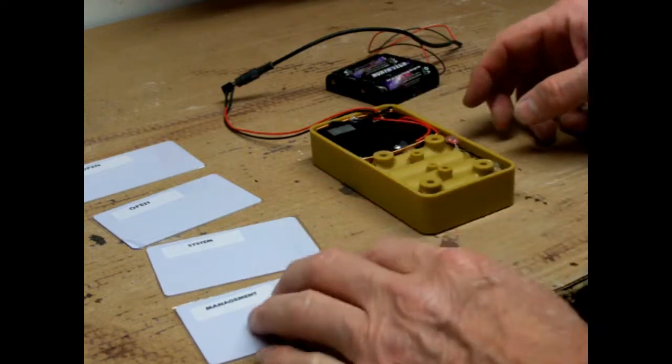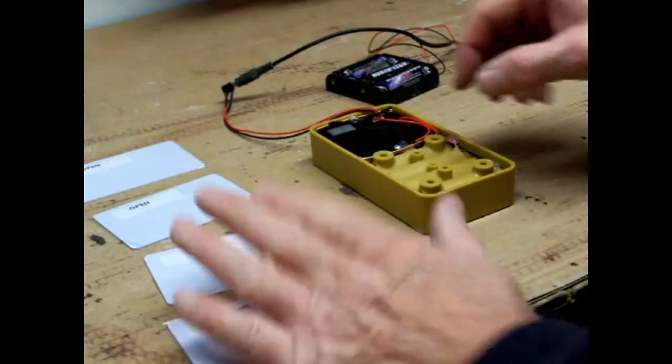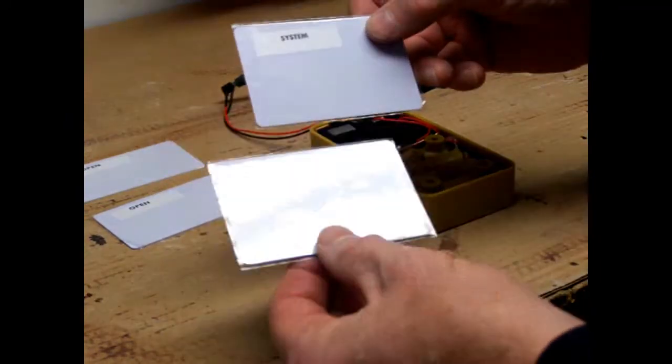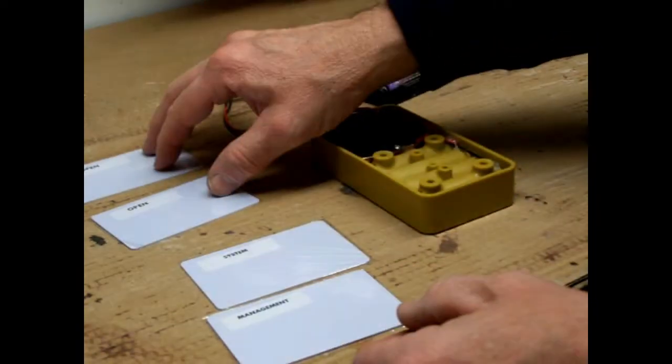So then the first thing that you want to do is, you'll have your cards here, and I have one that's going to be my system card, one as my management card, and two opening cards.